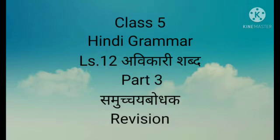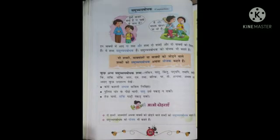Part 3, Name: Samuchya Bodhak. Bacchon, Avikari Shabd jiske antargat humne puna dohraaya — Kriya Vishishan pehla, doosra Sambandh Bodhak, teesra Samuchya Bodhak, jise Conjunction bhi kaha jaata hai English mein.